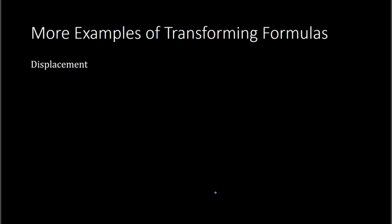Here is another example. This one is for displacement — all of these have been physics formulas. We have d equals the initial velocity times time, plus one-half times acceleration times time-squared. The v with a subscript of i means initial velocity. We are trying to solve this formula for a, for acceleration. When solving, remember I'm doing reverse order of operations, so I begin with addition and subtraction and then work my way from there.